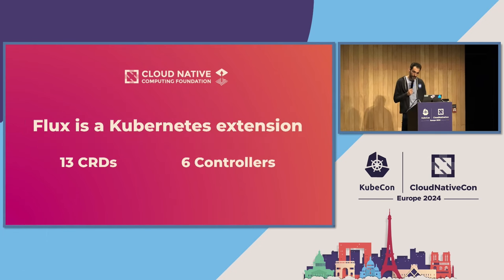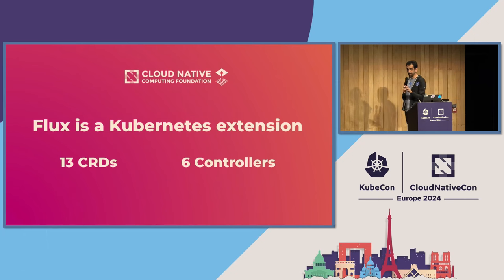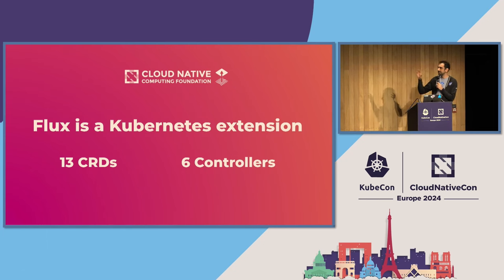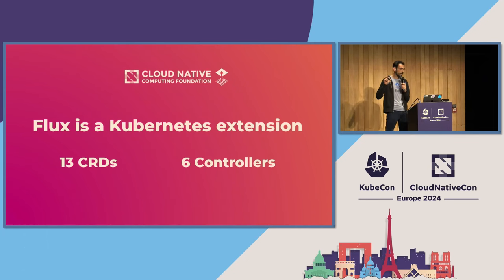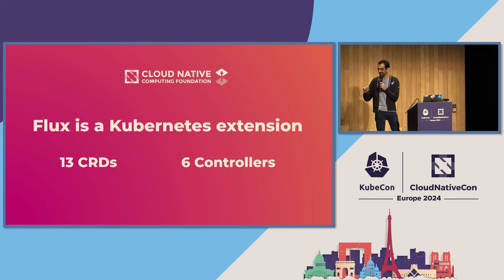From a pure technical perspective, Flux is a Kubernetes extension — it's 13 CRDs and six controllers. That doesn't mean you have to use all of them. A minimum Flux deployment requires two CRDs: a GitRepo and a Kustomization, using only two controllers. But given that almost all of you are using Helm, you'll need a third controller — the Helm controller. And you should probably be interested when Flux fails, so then you'll need the notification controller.